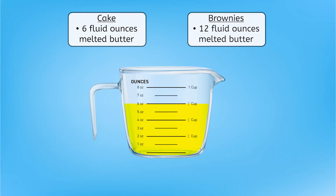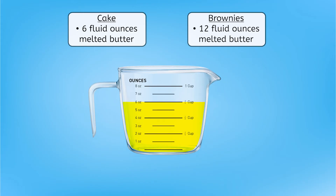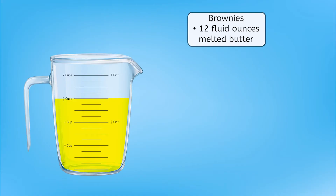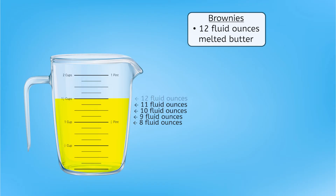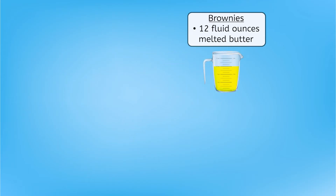This measuring cup shows six fluid ounces of butter, which matches the cake recipe. Notice how Mia used a pint to measure here? A pint holds two cups, or 16 fluid ounces. Since there are eight fluid ounces in one cup, we can count up from there: nine, ten, eleven, twelve fluid ounces. This one goes with the brownies.